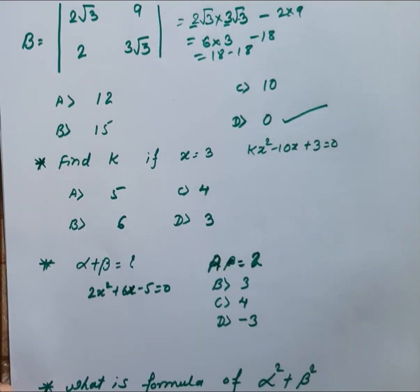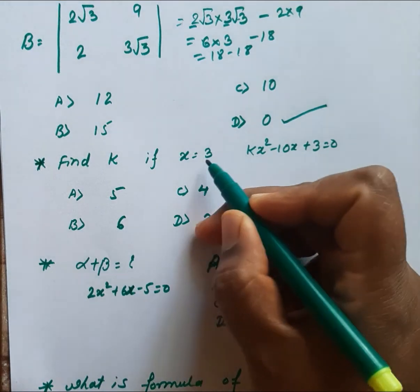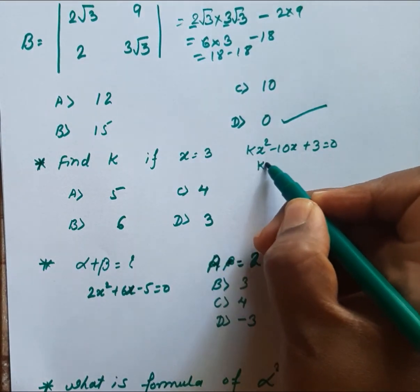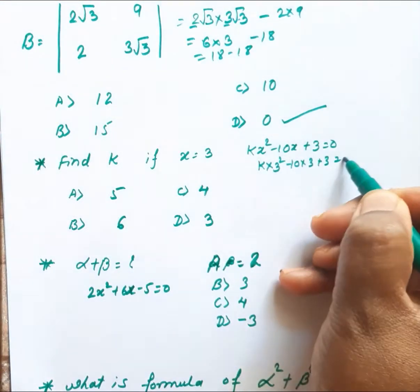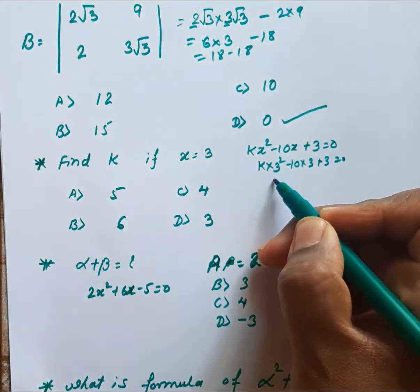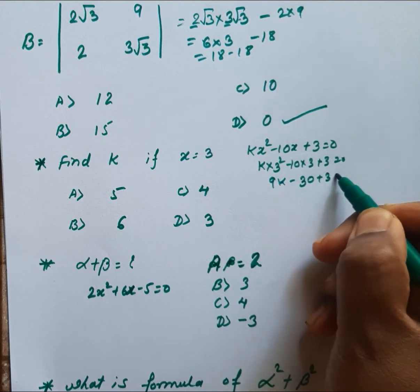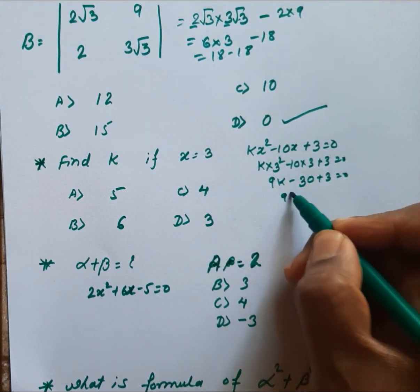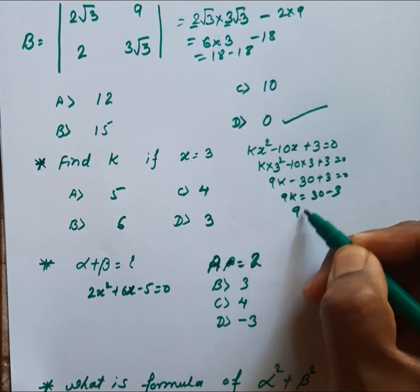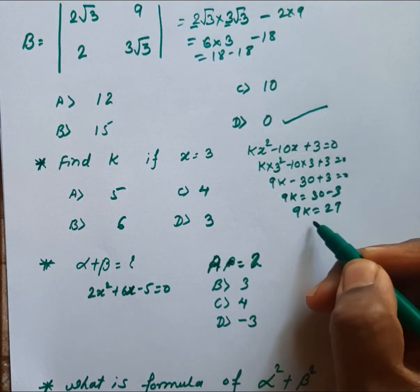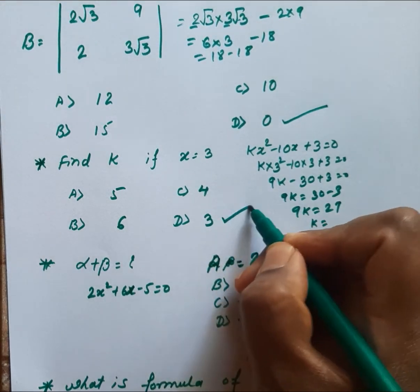Next: find the value of K if X = 3 is a root. Substitute X = 3: K(3²) − 10(3) + 3 = 0, so 9K − 30 + 3 = 0, therefore 9K = 27, therefore K = 3.